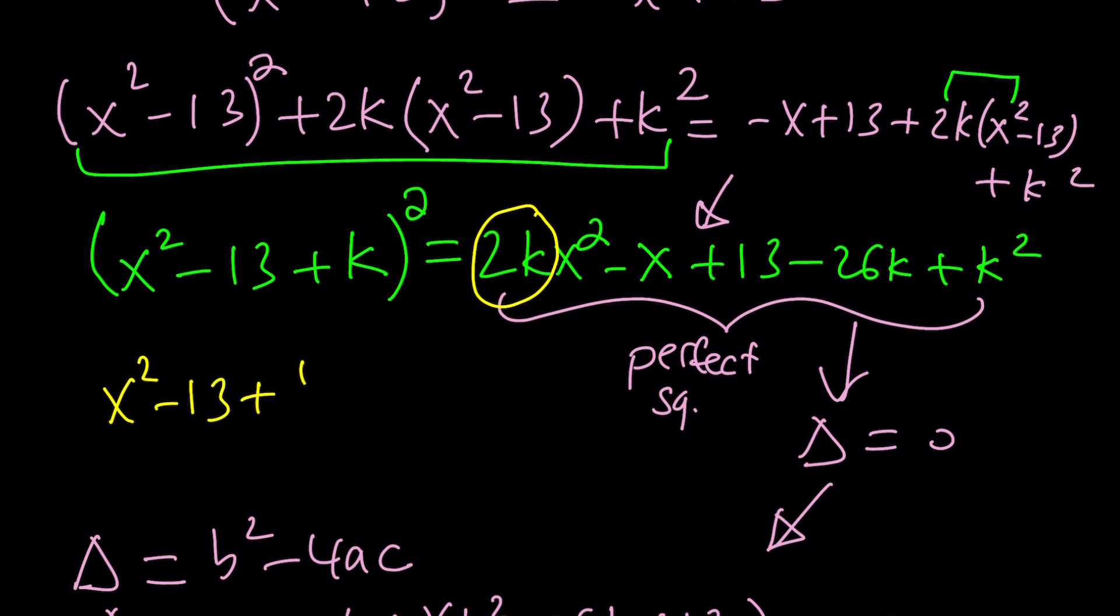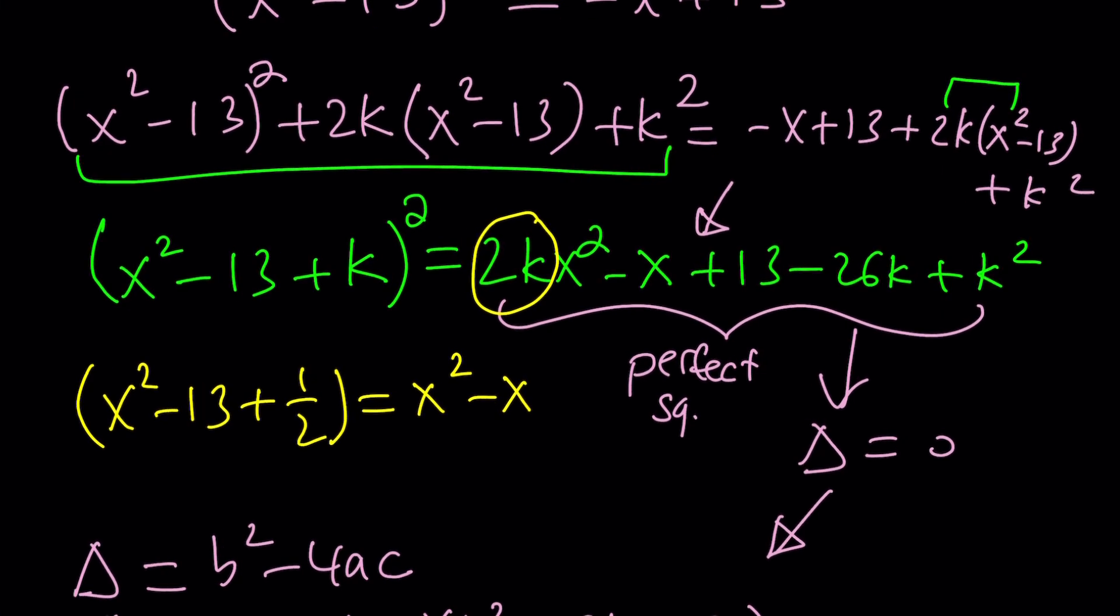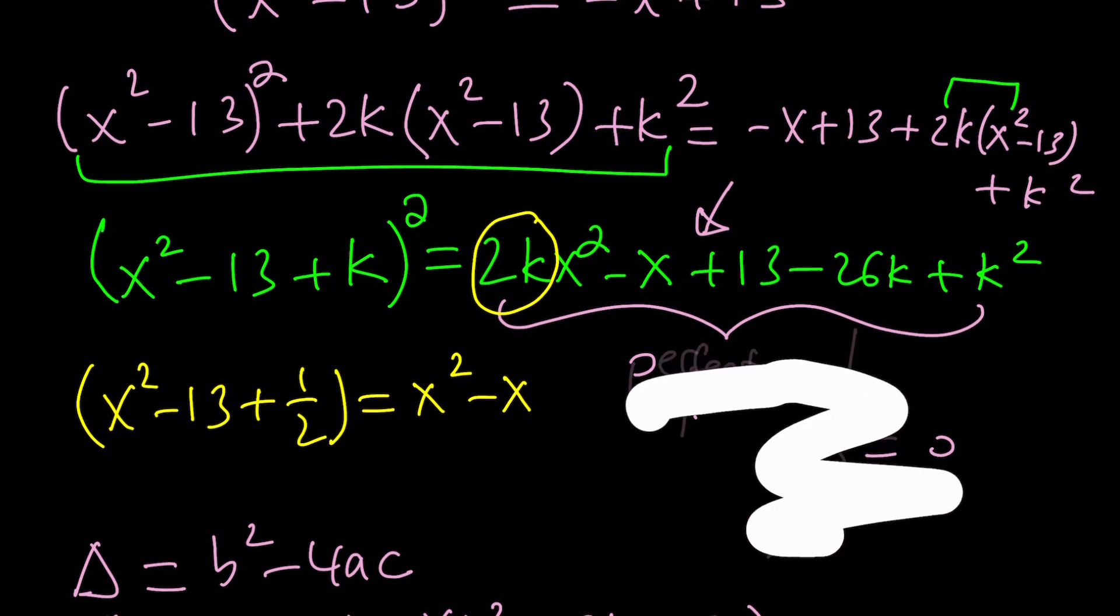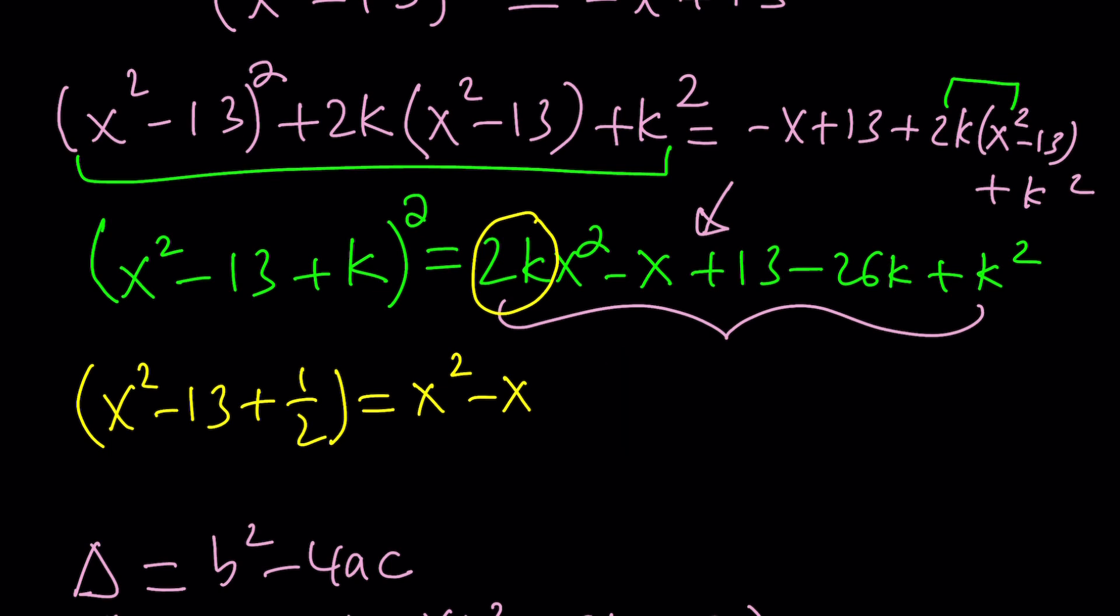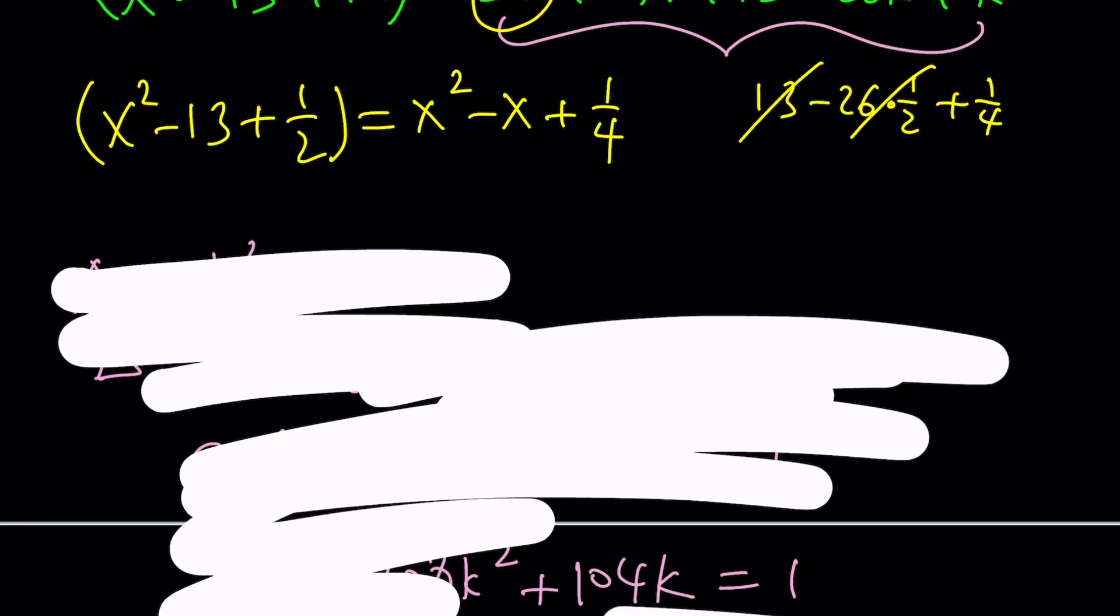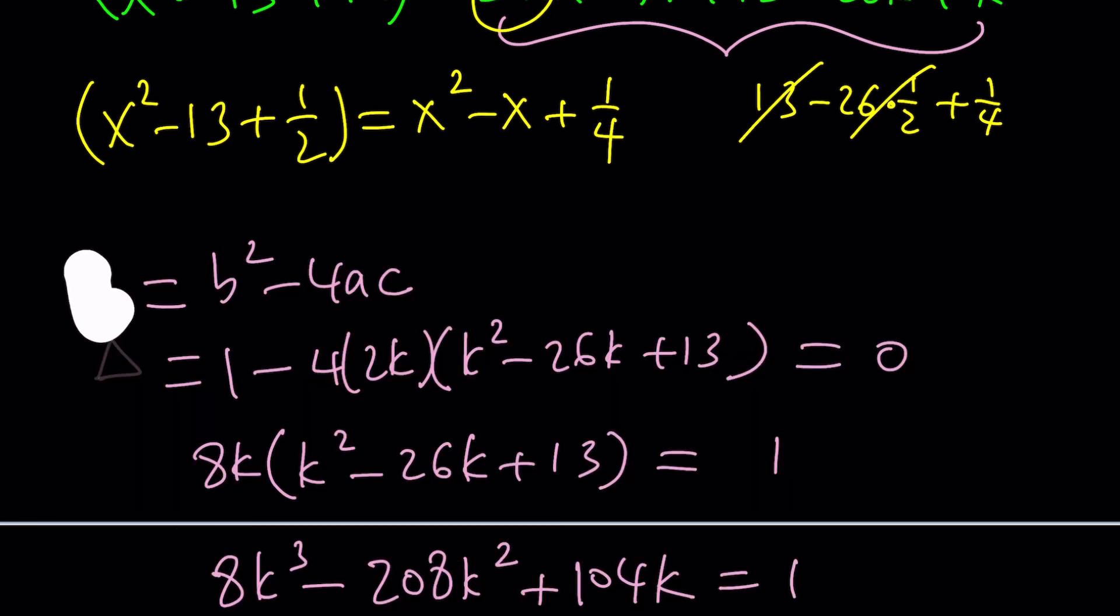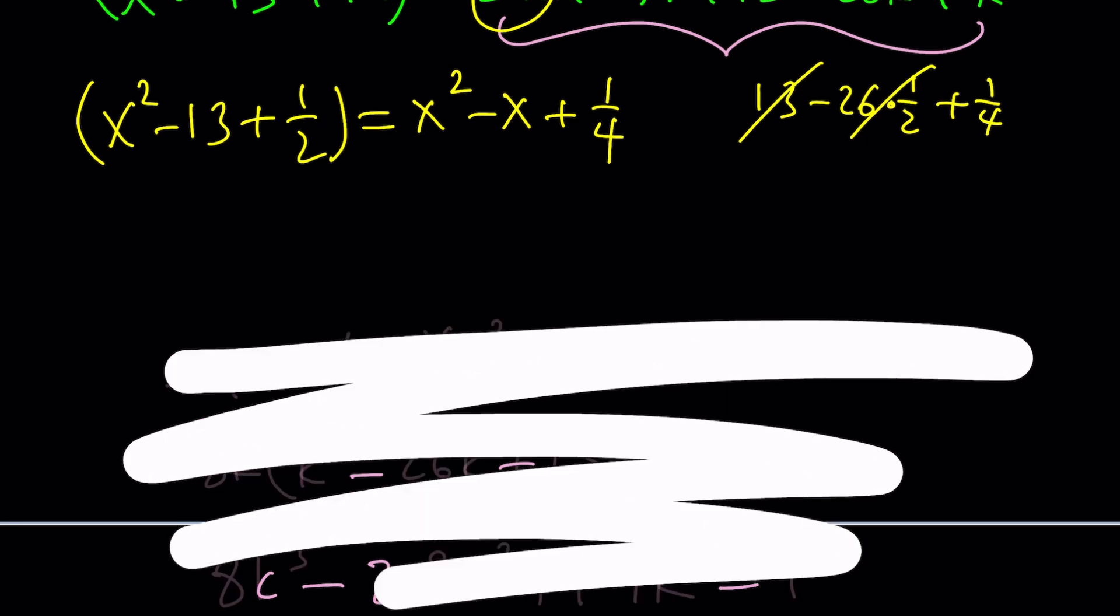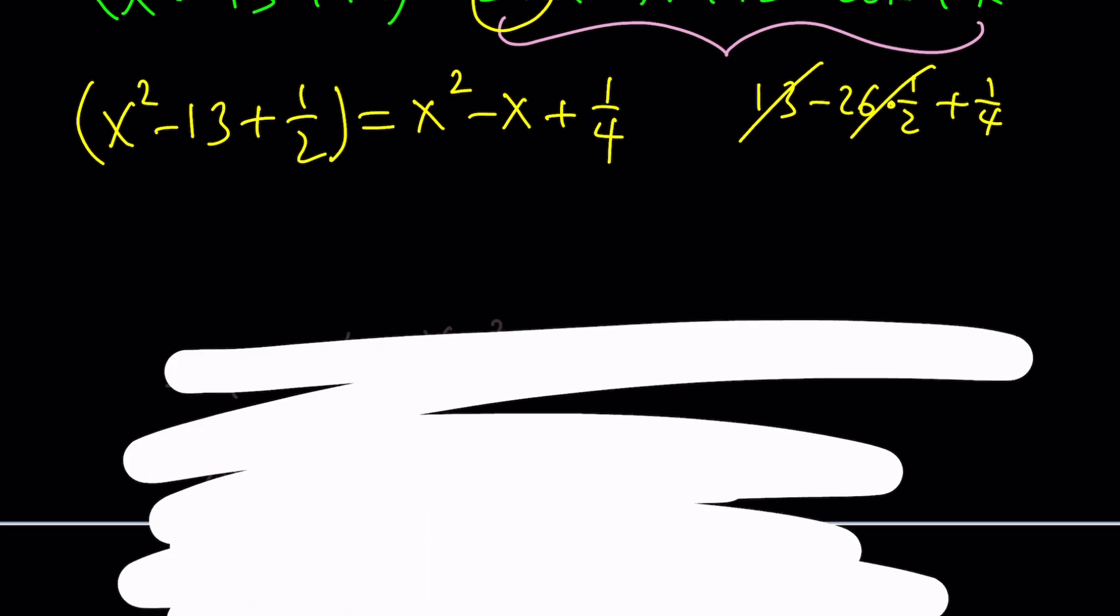Let me show you why. If k is 1 half, we're going to get something like this, and the right-hand side is going to be x squared minus x, and this is hopefully 1 fourth because that's how it's perfect square. Well, let's find out. 1 half squared is, let me clear this area. So this part is 13 minus 26 times 1 half plus 1 fourth. This is 13. Yay. I get 1 fourth, which is expected because that's a perfect square. So let's go ahead and erase this as well. So now we're going to go ahead.